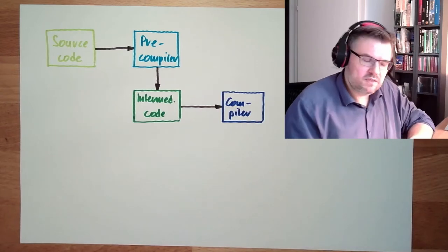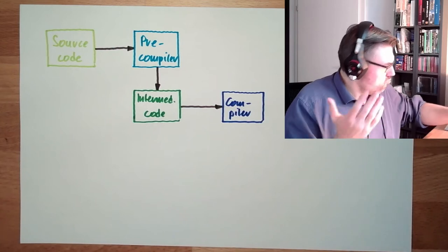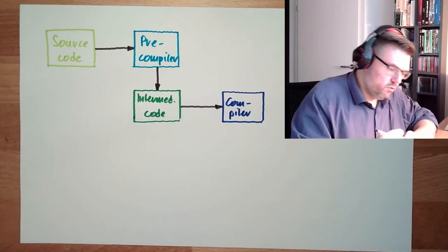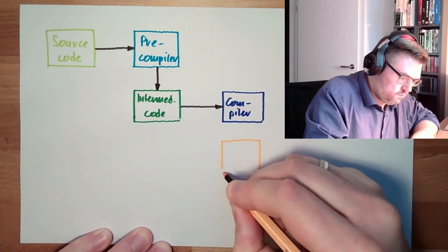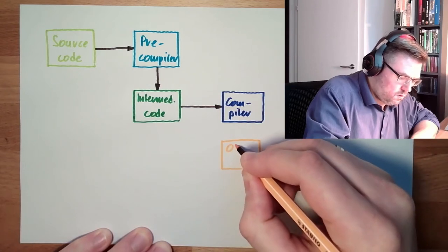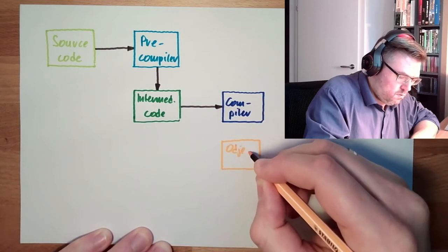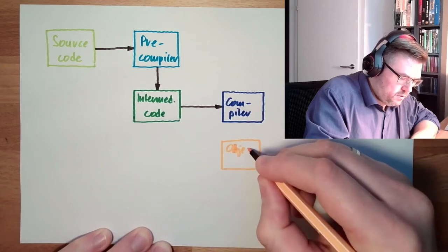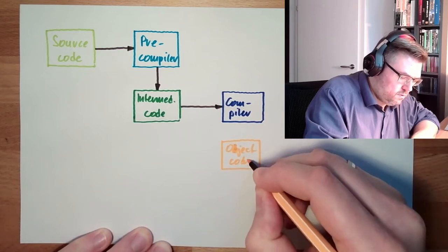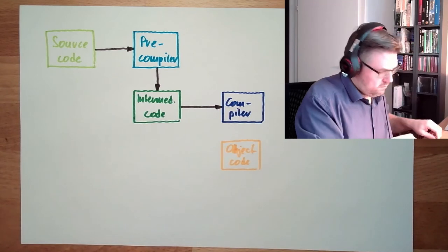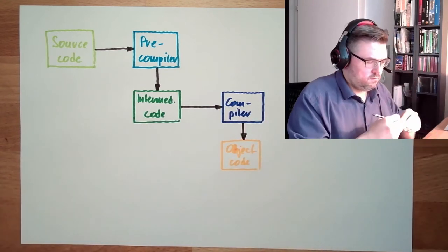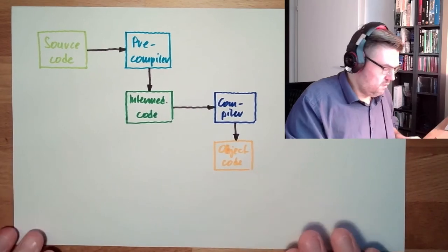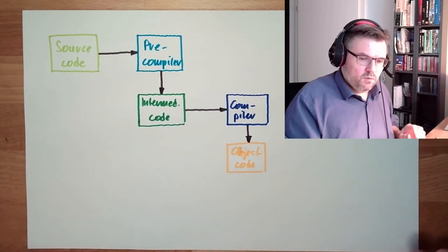And then what is the outcome here is called object code. So there is an object code here. Object code. Must also not be.